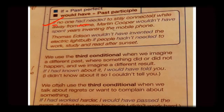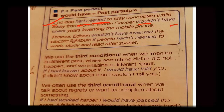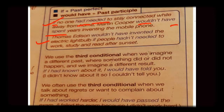'If' is there, then 'had' is there — that means past perfect — and the third form of the main verb follows. The result clause is: 'Martin Cooper would not have spent years inventing the mobile phone.' 'Would' is there, then 'have', and the third form of the main verb. The second example is: 'Thomas Edison would not have invented the electric light bulb if the people had not needed to work, study, and read after sunset.'